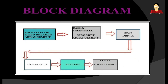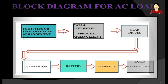The block diagram of this machine for DC sources is: footstep or speed breaker arrangement, then cam and freewheel sprocket arrangement, then gear drives, then generator, then battery, then load such as a street light.